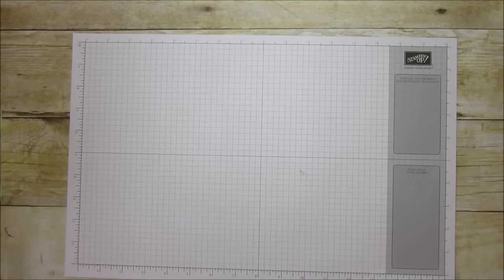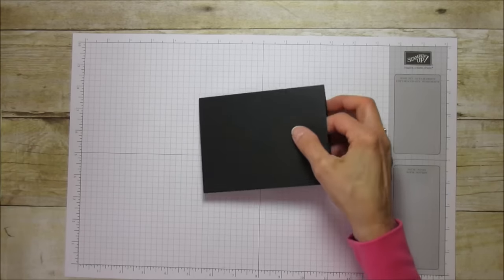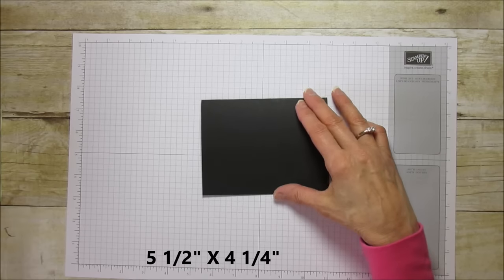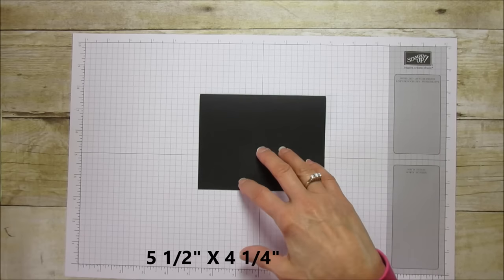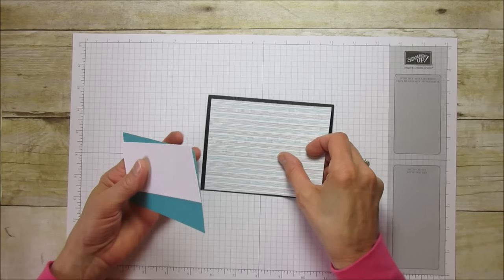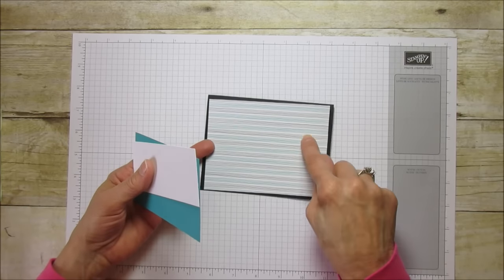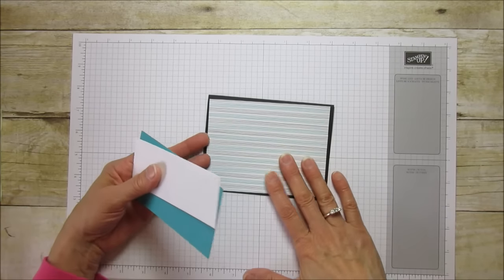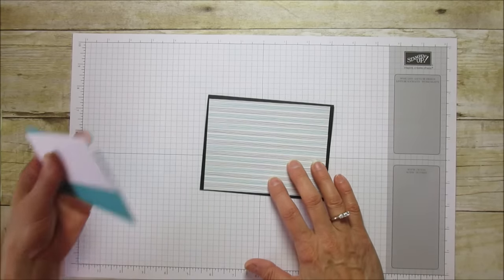Let's get started. What you'll need is a basic card which is five and a half by four and a quarter. I showed in a previous video how to cut and score to get your basic card.